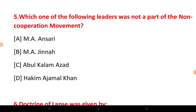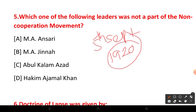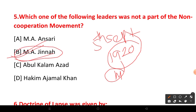Which one of the following leaders was not a part of the non-cooperation movement? The non-cooperation movement was launched with the goal of obtaining full independence. The correct answer is Muhammad Ali Jinnah — he was not part of the non-cooperation movement.